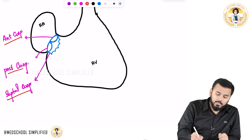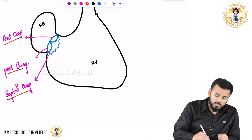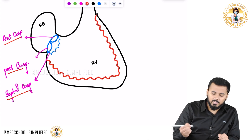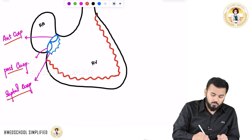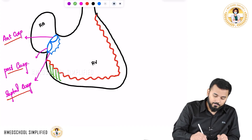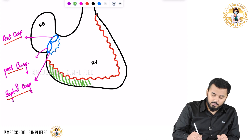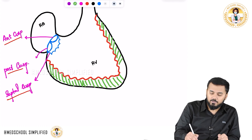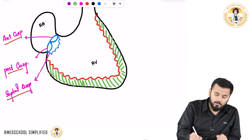Inside the right ventricle, there are muscles. But these muscles are not that thick in comparison with the left ventricle. The muscles which are located in the right ventricle are less thick in comparison with the muscles located in the left ventricle.